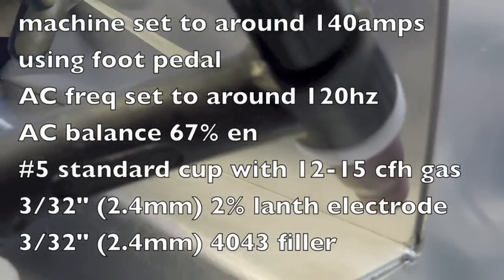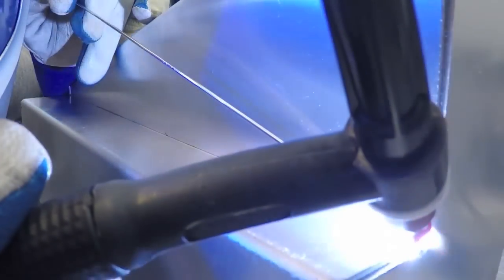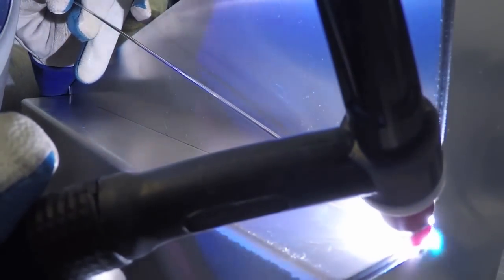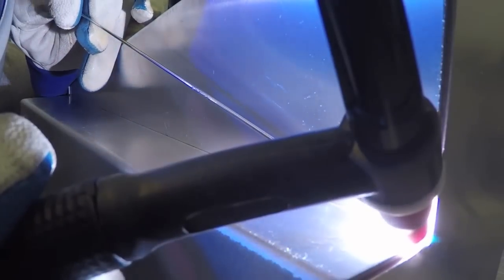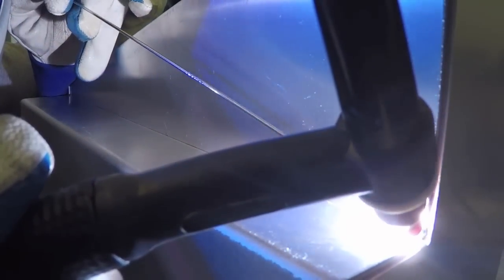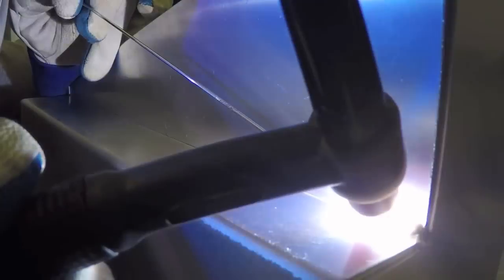Here's the basic settings. Frequency set to about 120 hertz, roughly 140 amps on the machine, but not quite using that once he gets going, just operating the foot pedal. Sometimes 140 amps at the start, in the middle of a run when things are cold, but then as the heat builds up and things get warmed up, backing off - that's the benefit of using a foot pedal.